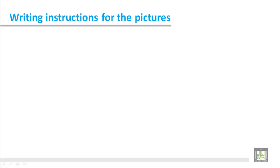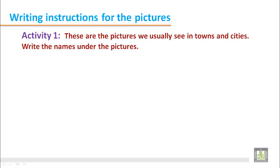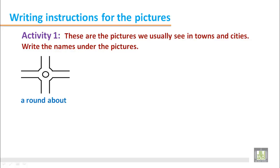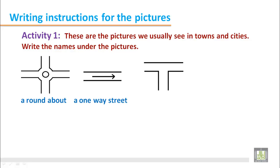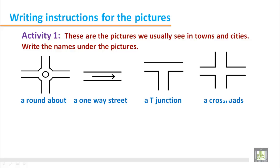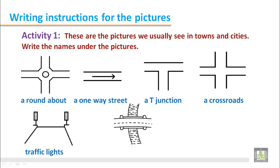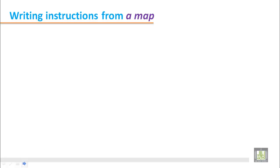Writing instructions for the pictures activity. These are the pictures we usually see in towns and cities. Write the names under the pictures. This is a picture and we are going to write the name, just like a roundabout, a one-way street, a t-junction, a crossroads, some traffic lights, and a bridge.